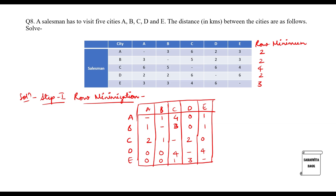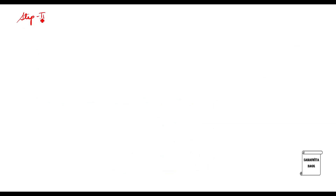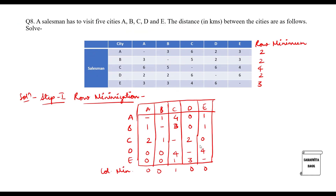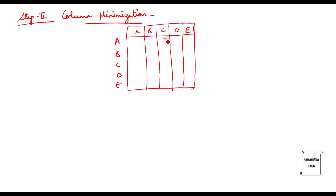Let's check the columns. The third column does not have a zero — its minimum value is one. The others have at least one zero. So I'm calculating the minimum value of the columns. Step two is column minimization. We'll copy the first, second, fourth, and fifth columns as they are. For the third column, I will subtract one from each value, giving: three, two, dash, three, zero. Then copy the rest of the values.